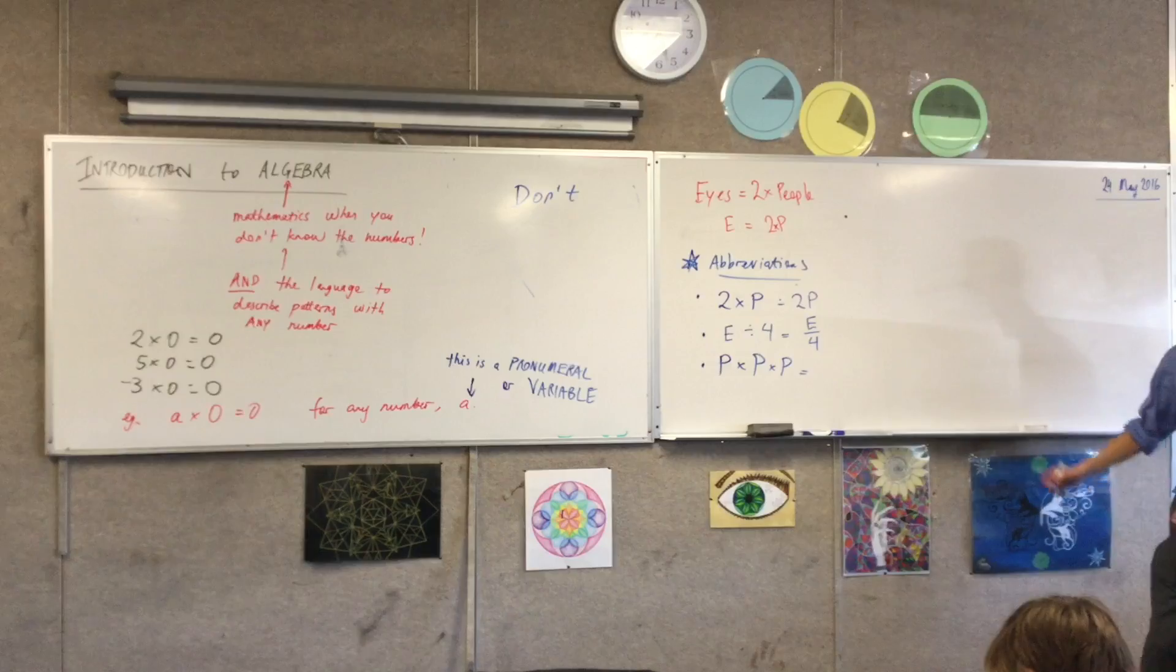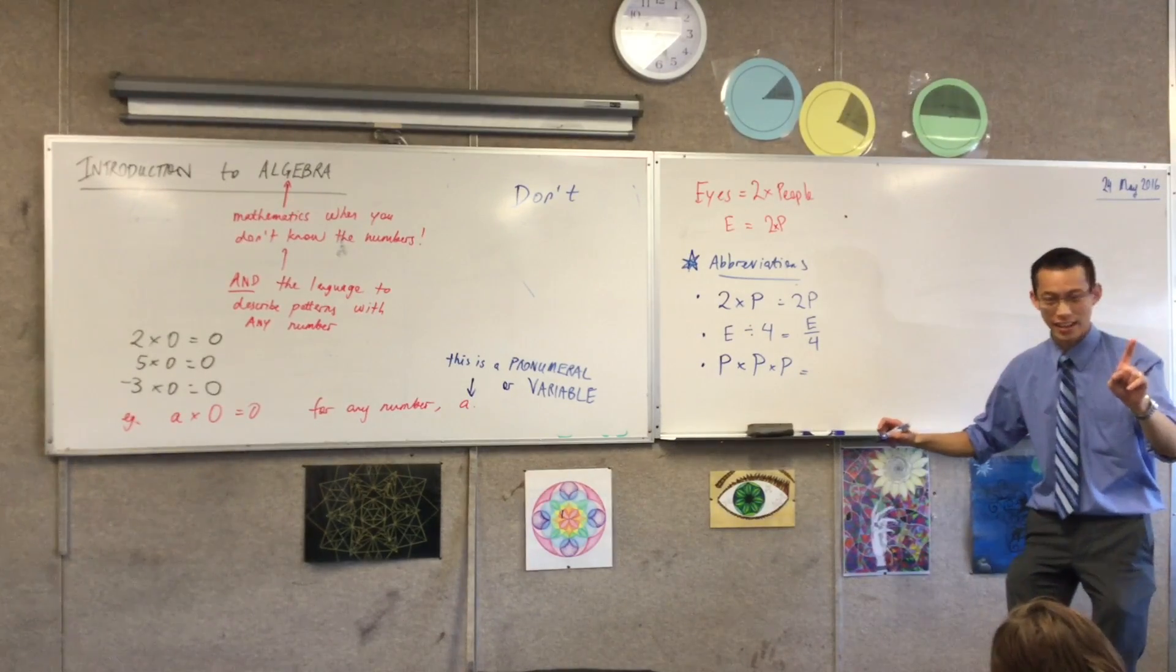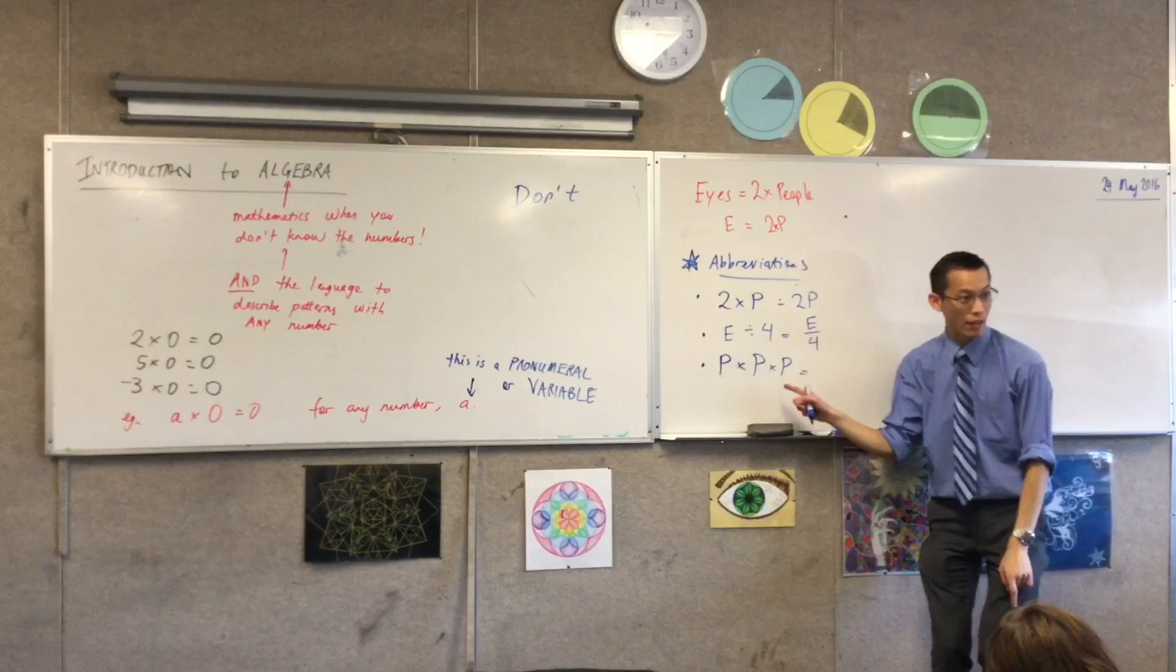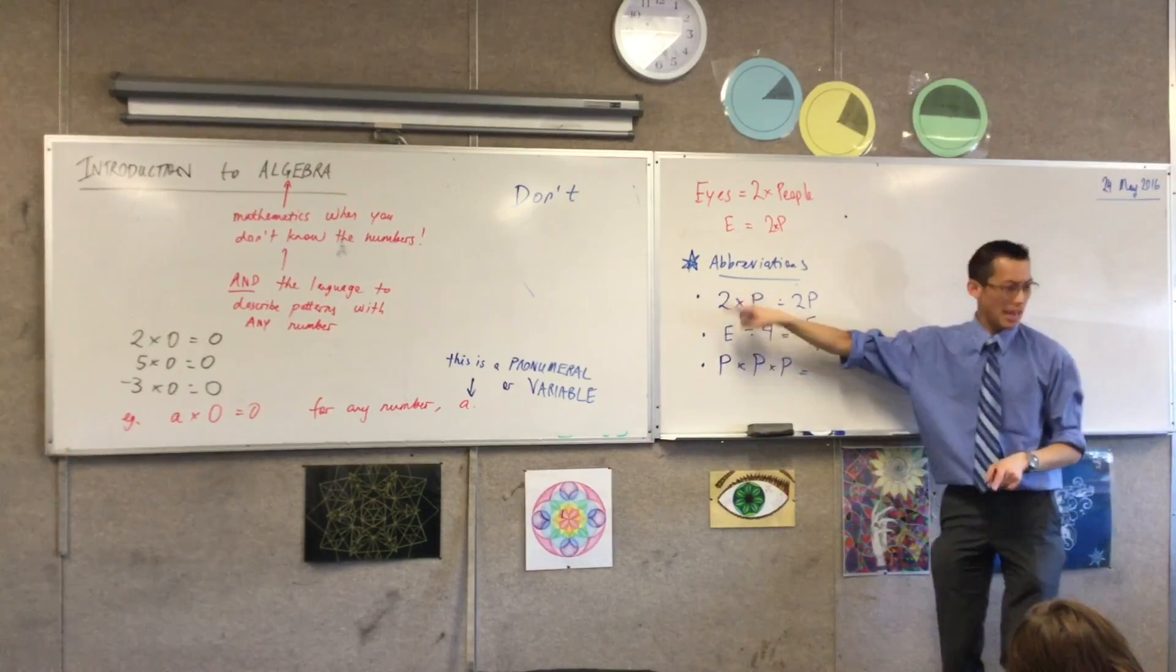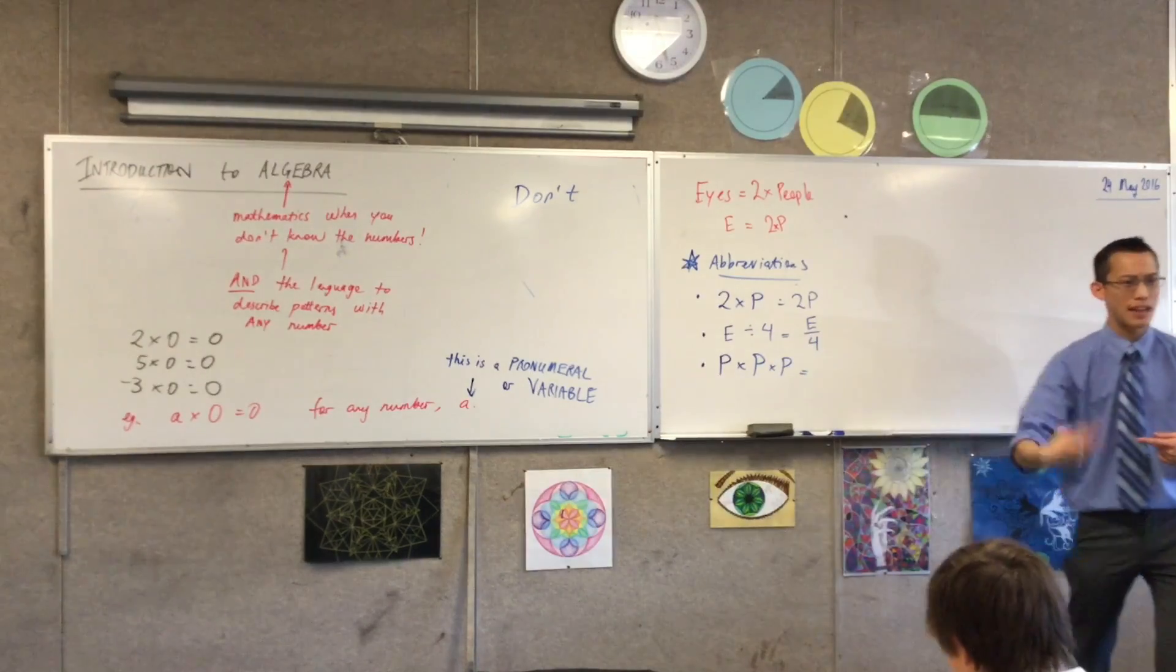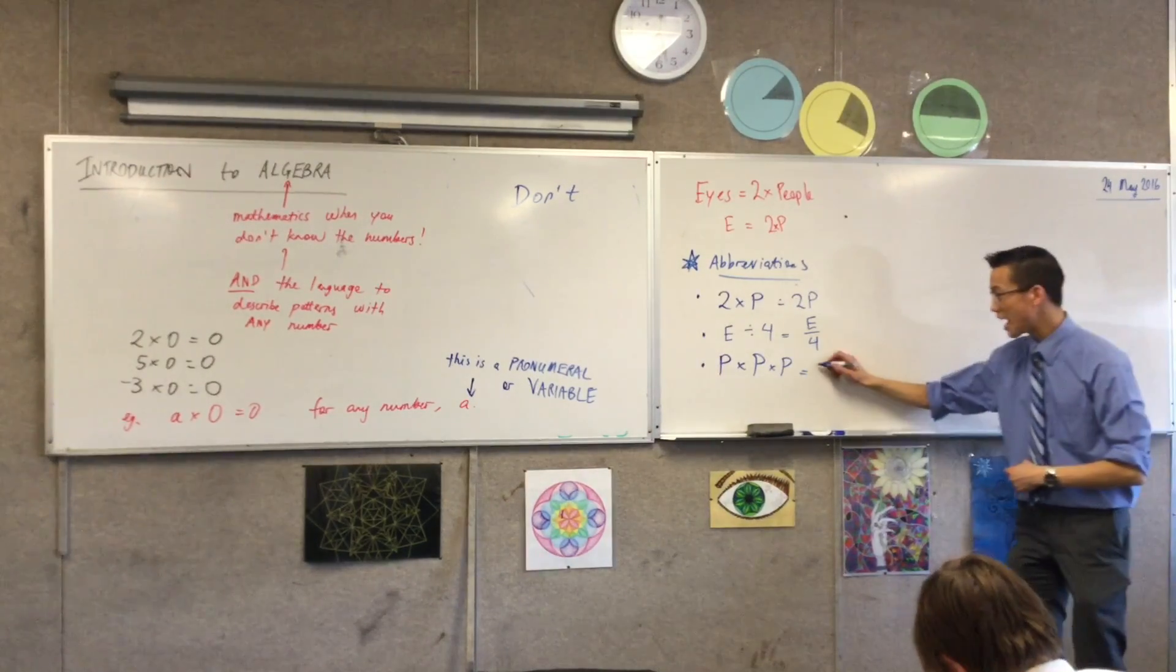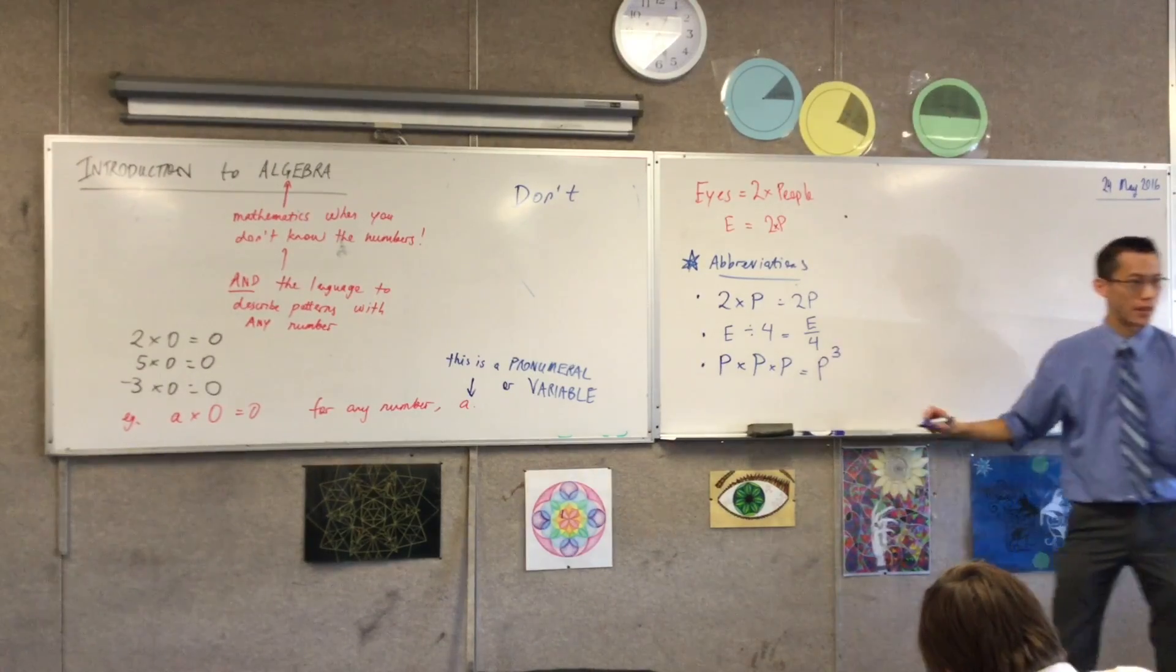Three then p. Ooh, okay. Now interestingly, what I'm doing is I'm multiplying. If I had three and then p like this, that would be p plus p plus p. But here I'm multiplying three times, so Selena, what would you do instead? P cubed.